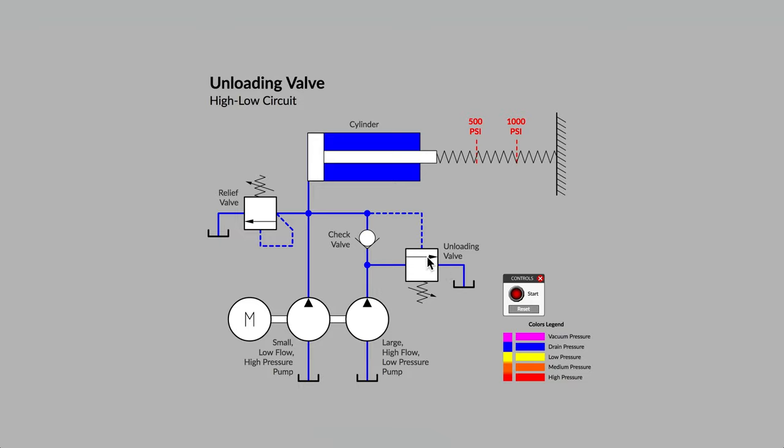The poppet, represented by an arrow inside of the box, will move to the open position against the force of the spring only when the pilot pressure is high enough. See if you can figure out what the pressure setting is for the relief valve and for the unloading valve.